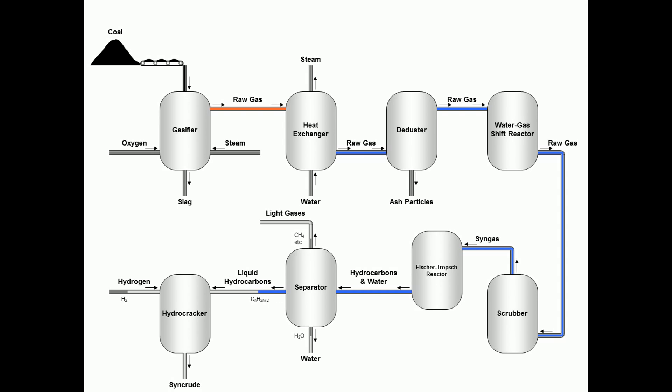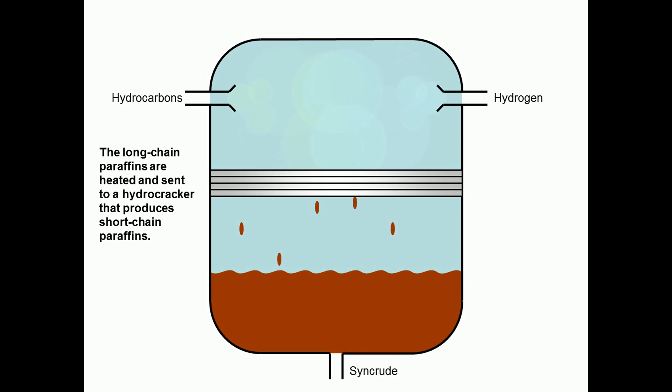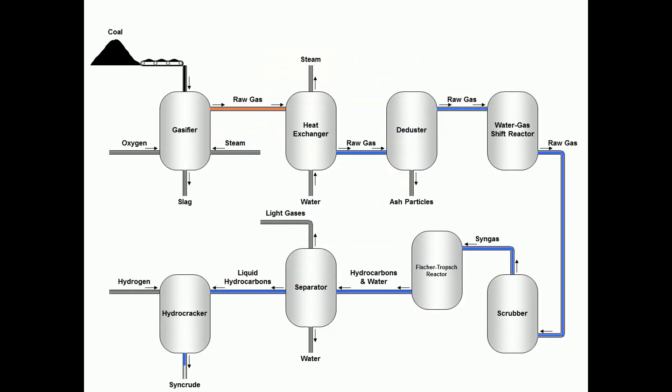The last step is hydrocracking. In the hydrocracker, the long-chain hydrocarbons are heated and reacted with hydrogen to form short-chain hydrocarbons such as jet fuel, diesel, and gasoline. Finally, the refined crude is stored.